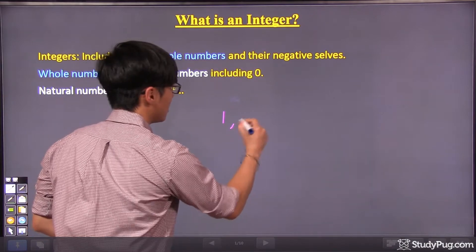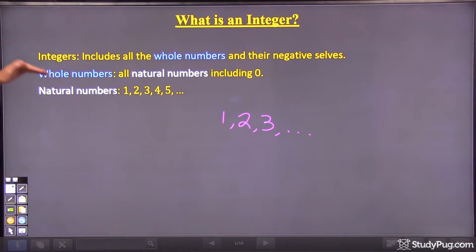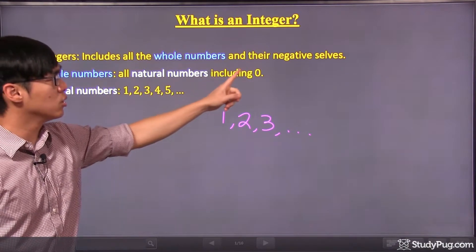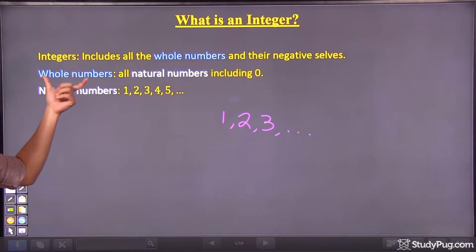So let me write it down. One, two, three, so on and so forth. Next, whole numbers. Whole numbers are all the natural numbers including zero.